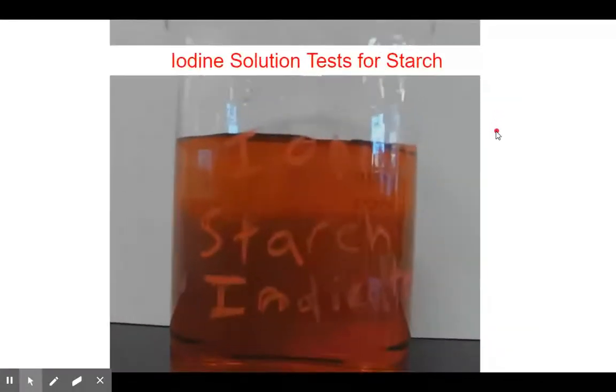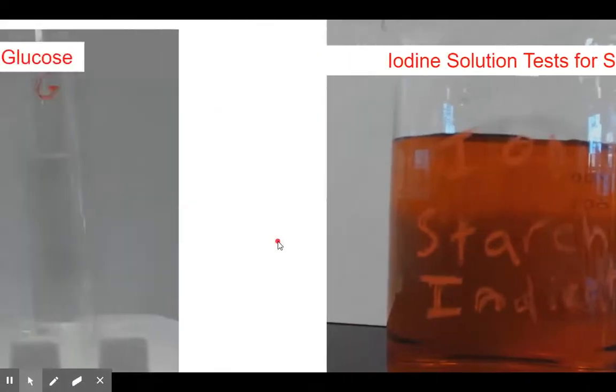The next thing we're going to do is test for starch. We're going to be using an iodine solution that is an amber color. Right now when we dilute it in water, it's going to have a lighter yellow color, and we're going to see what happens in the presence of starch. It's going to turn into a purple or black color only in the presence of starch.